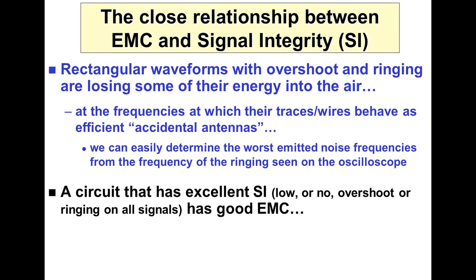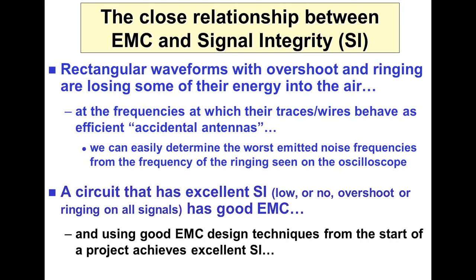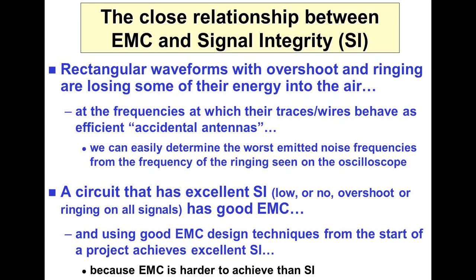A circuit that has excellent signal integrity — low overshoot or no overshoot, no ringing — has very good EMC. You'll find that because EMC design is harder to achieve than signal integrity design, if you design in good EMC, signal integrity is taken care of. In fact, signal integrity is better than you would normally achieve by just wrestling with the signal integrity design. So instead of designing a thing, wrestling with the SI and the power integrity, then putting it in a chamber and wrestling with the EMC, we design the EMC in using good techniques from the start — and signal integrity and power integrity are just wonderful. It saves a lot of time, money, and late nights.